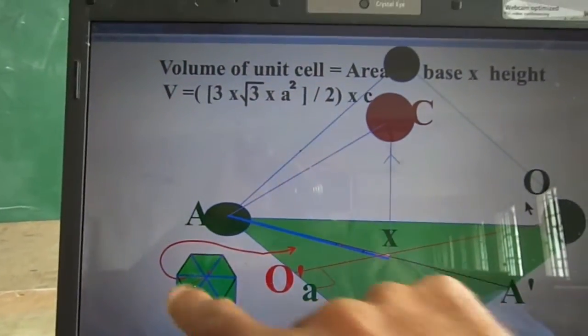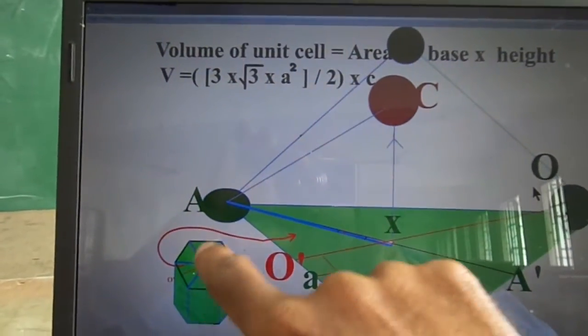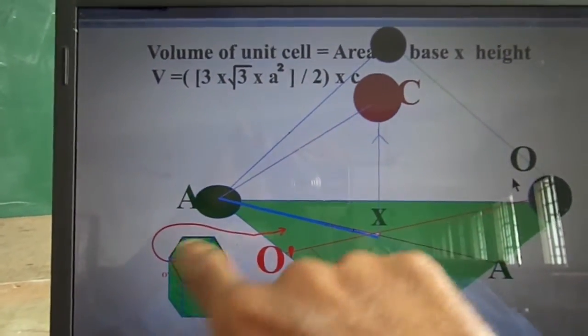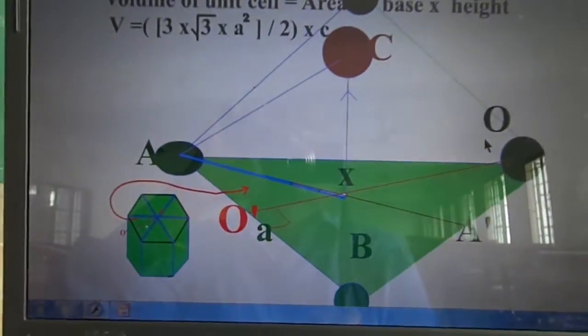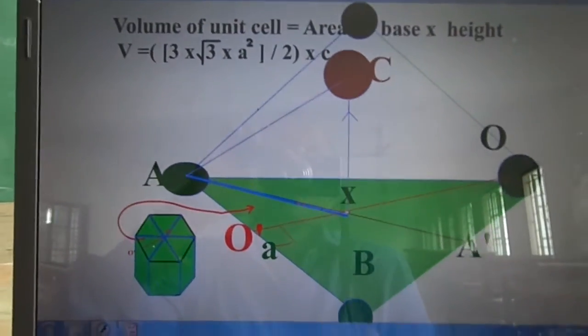So when I multiply, the base area and height leads to the volume of the unit cell. So the whole structure is colored with green. So volume of the unit cell is calculated now.